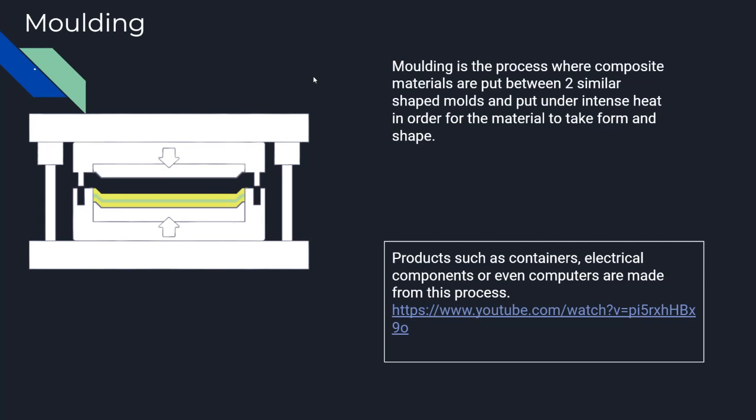Molding is a process where two composite materials are placed between two similarly shaped molds and pressed together. The pressing force bonds the composite to form the desired product.